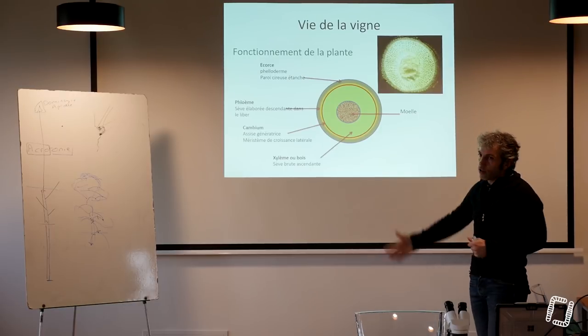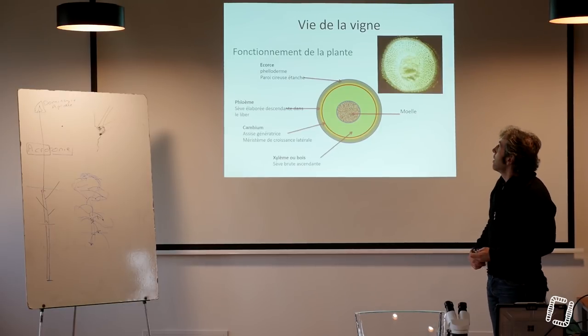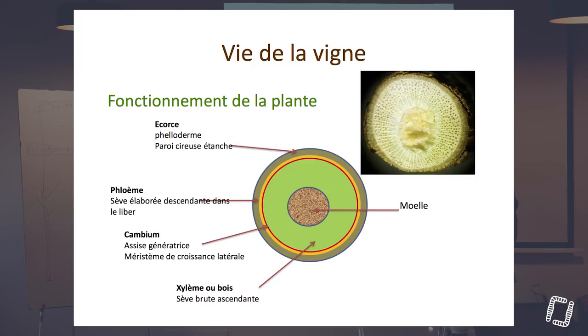Donc, si on coupe le sarment dans l'autre sens, je voudrais vous montrer ici que dans la partie verte là, qui est la partie où on voit tous ces tubes là, c'est là où monte la sève brute. L'eau et les minéraux montent dans cette partie.